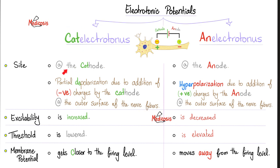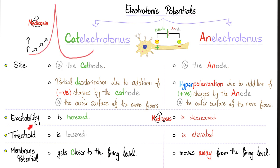Where do you find cat electrotonous? At the cathode. And the an electrotonous is at the anode. What happens in cat electrotonous? Partial depolarization. Why? On the outside, the cathode is negative, but on the inside there are positive ions — that's why they are attracted to the negative. So you'll have tons of positive on the inside, which causes depolarization. But it's not the strong, robust depolarization of the action potential — this is small, minuscule, partial depolarization of the electrotonic potential. Subthreshold. Partial depolarization means you are becoming more positive, moving closer to the firing level. Therefore, the threshold is being lowered and excitability is increasing.